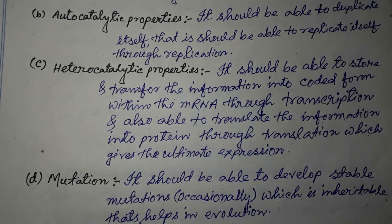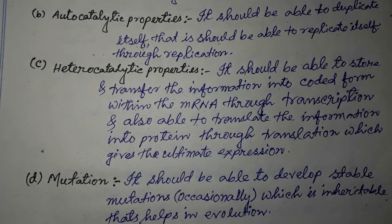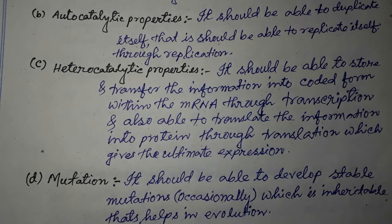So if there is a mutation, then there is a variation; then there is adaptation; and ultimately there is evolution. So if there is a material or substance that is a genetic material, it should have a few features: first, it should be universal, present in every cell of the body of all organisms. Second, autocatalytic properties — it should be able to duplicate itself. Third, heterocatalytic properties — it should be able to store and transfer information into mRNA, and through mRNA ultimately into protein, which gives the ultimate expression. And fourth is mutation — it should be able to develop stable mutations occasionally, which are inheritable and aid in evolution.